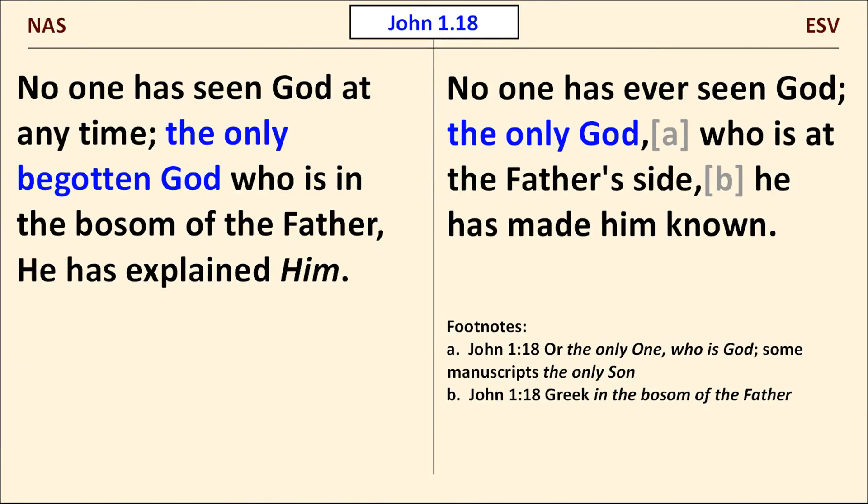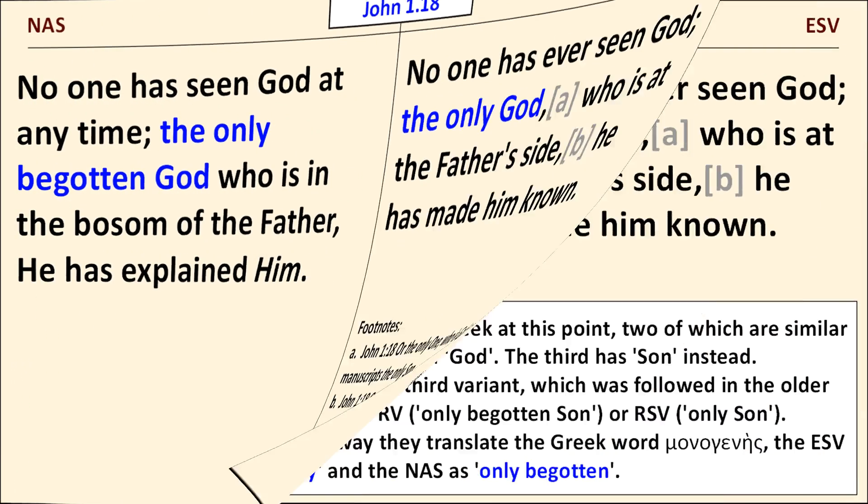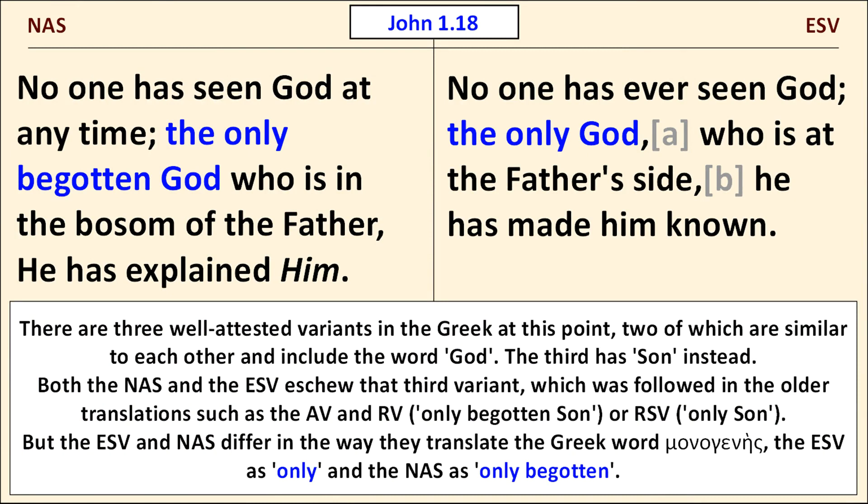Both the NAS and the ESV translate a Greek text that includes the word God. Many of the older translations were working from a text that included the word son, so they read only begotten son, like the KJV, or only son, like the RSV, instead of only begotten God. The NAS and the ESV differ in the way they translate the Greek word monogenes. The NAS takes it to mean only begotten, while the ESV, like the RSV before it, translates it as only. I'm not a philologist, just a Bible reviewer, so I depend on lexicons.